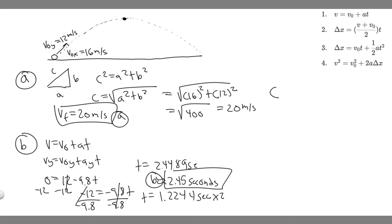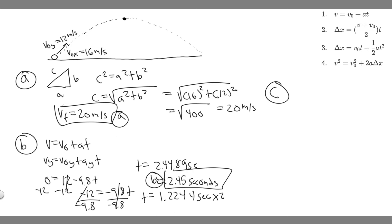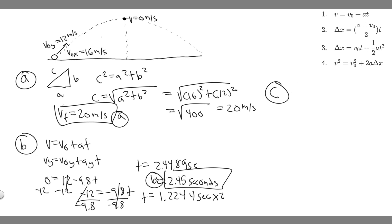Now for Part C, we're trying to find the maximum height obtained by the ball. We'll do something similar — we know that at the maximum height, the velocity in the Y is zero. This time we're solving for delta-Y, so we'll use the formula: V-sub-Y squared equals V-sub-0-Y squared plus 2 times A-sub-Y times delta-Y.